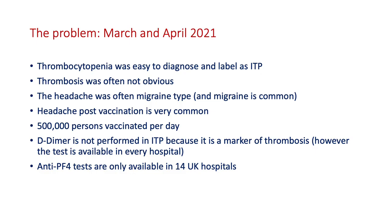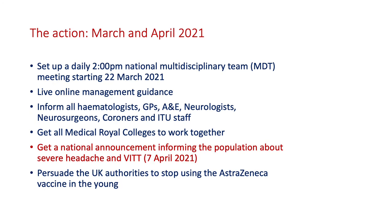The problem in March and April was that thrombocytopenia was being labelled as ITP, thrombosis was not always obvious, and headache was often diagnosed as migraine — which is indeed common after vaccination, with half a million people being vaccinated per day. D-dimers were not being performed in ITP patients since it's a marker of thrombosis, and while D-dimer is available in every hospital, anti-platelet factor 4 testing is only available in 14 hospitals in the UK.